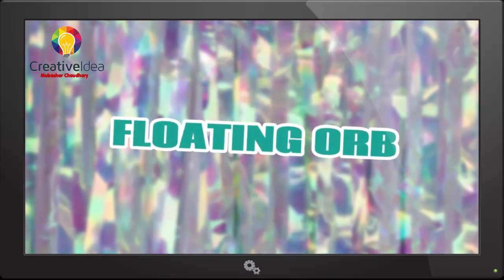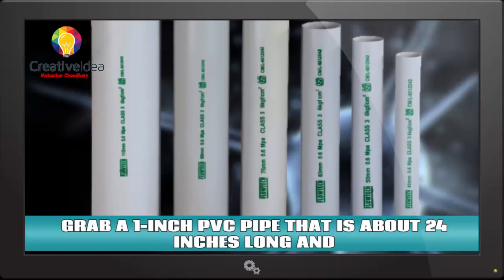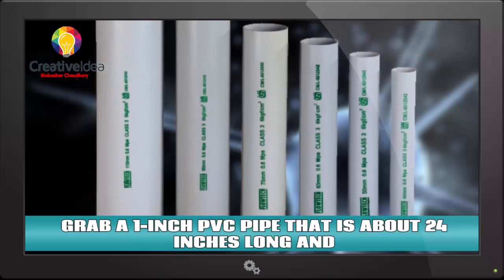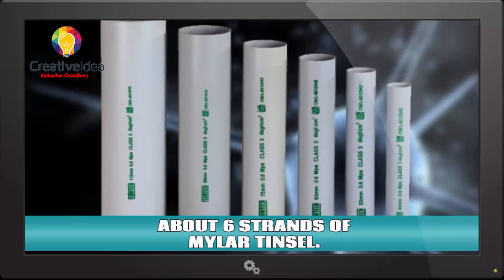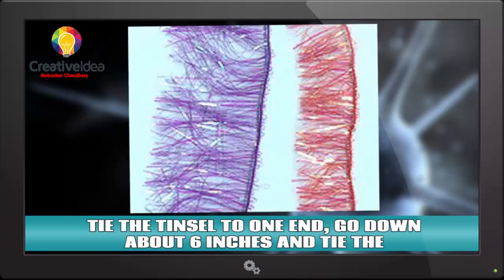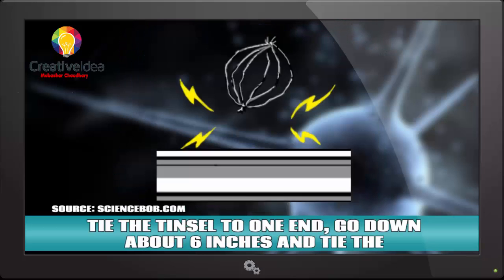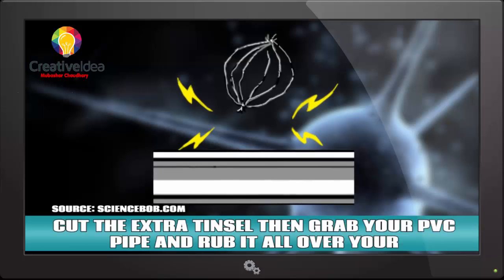A floating orb! Grab a 1 inch PVC pipe that is about 24 inches long and about 6 strands of mylar tinsel. Tie the tinsel to one end, go down about 6 inches and tie the tinsel to the other end. Cut the extra tinsel.